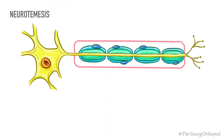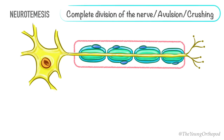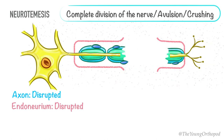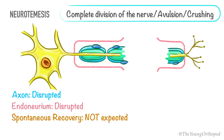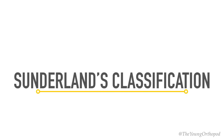Neurotmesis is the most serious injury. In this type, there is complete division of the nerve, or severe avulsing or crushing injury. The axon, the Schwann cell, and the endoneurial tubes are completely disrupted. Depending on the severity of the injury, the perineurium and epineurium are also disrupted. Spontaneous recovery is not expected, and surgical intervention is usually required. It is seen usually in association with lacerated wounds, open fractures, and gunshot injuries.